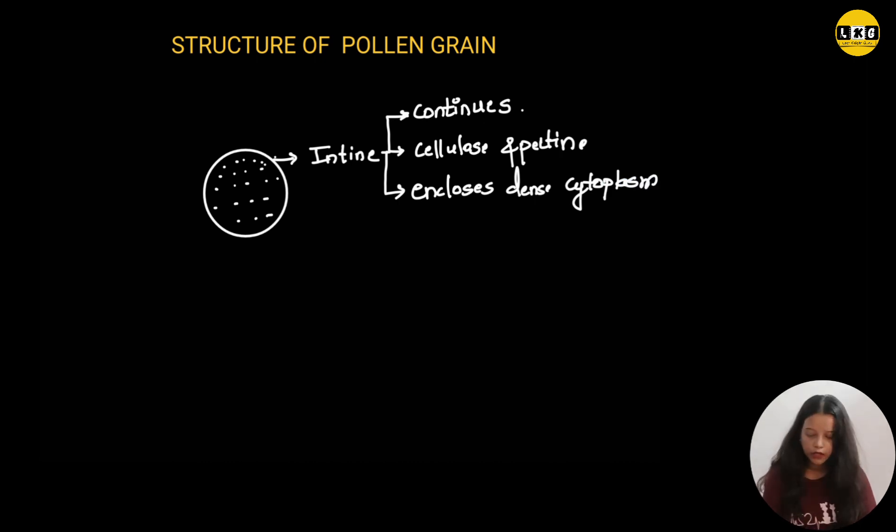Clear? Now let's draw the outer layer. This is the outer layer of the pollen grain. What is the outer layer of the pollen grain known as? It is known as exine. As you all can see, exine is discontinuous. There is no continuity. And it is the hardest layer.